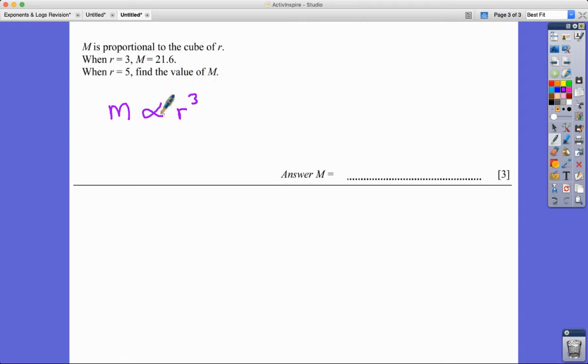So I don't need to do one over or anything like that. It's just directly proportional there. And my next trick, so step one is to write it with the proportionality sign.